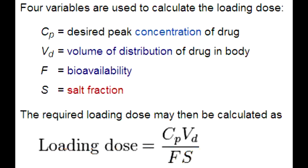What is the equation of loading dose? The equation of loading dose is CP times VD over F. CP is the desired peak concentration, or the target plasma concentration that you are trying to achieve. VD is the volume of distribution, and F is bioavailability. So loading dose equals target plasma concentration times volume of distribution over bioavailability.